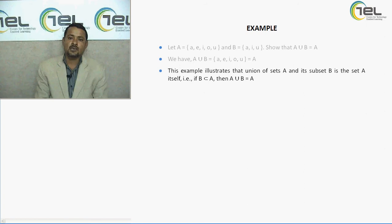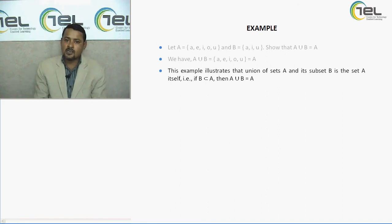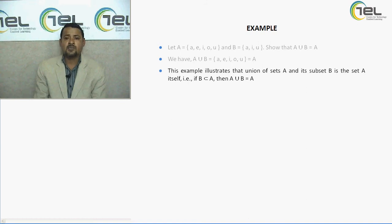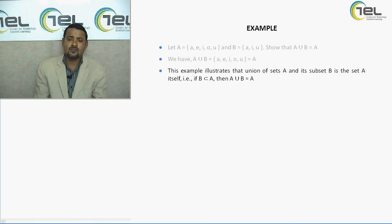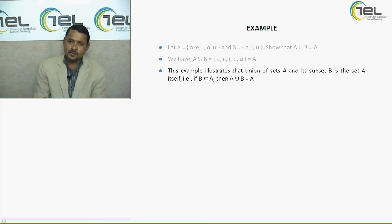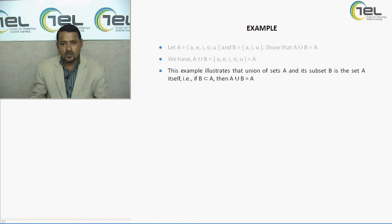This illustration gives us the theorem that the union of two sets will be exactly equal to one of the sets if one set is a subset of the other. A subset means each element of set A is present in set B, and set B contains more elements — so A is a subset of B. Here B is a subset of A, so A union B equals A. If one set is a subset of another, the union gives rise to the larger set.